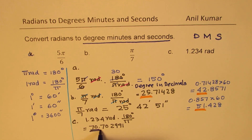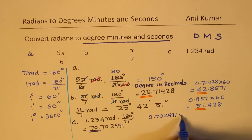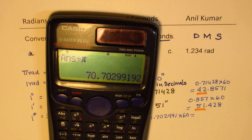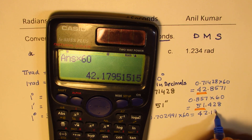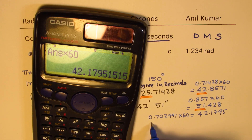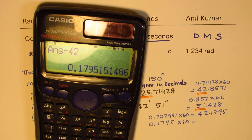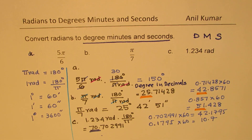The decimal part needs to be converted to minutes and seconds. We take 0.70299 and multiply by 60 to get 42.1795 — so 42 minutes. Then we take the decimal remainder 0.1795 and multiply by 60 to get seconds, which gives approximately 10.77 seconds.